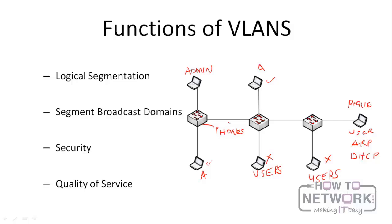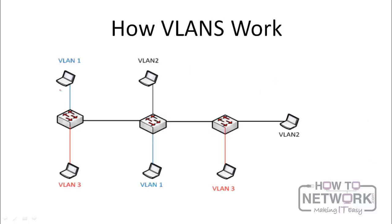Now let's look at how VLANs work in a network environment. We divide the network into VLANs: VLAN 1 represented in blue, VLAN 2 represented in black, and VLAN 3 represented in red. When a device in a particular VLAN tries to send a message across the switch, the switch notes the VLAN that the frame comes in from and makes sure it only sends the frame out of ports that are in that VLAN. It checks the destination MAC address to find the destination port and also verifies that the destination port is on the same VLAN. If the destination port for the MAC address is not on that VLAN, it would just drop the frame.